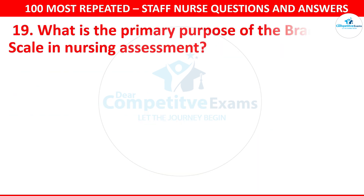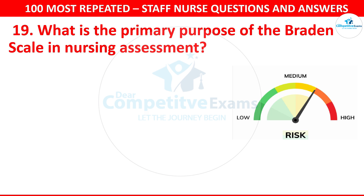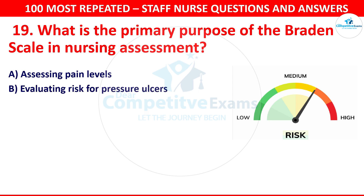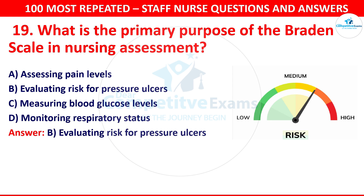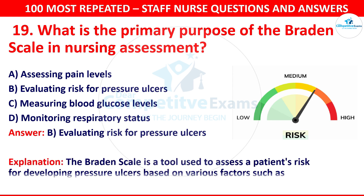Question 19. What is the primary purpose of the Braden scale in nursing assessment? Your options are assessing pain levels, evaluating risk for pressure ulcer, measuring blood glucose levels or monitoring respiratory status. The correct answer is evaluating risk for pressure ulcer. The Braden scale is a tool used to assess a patient's risk for developing pressure ulcers based on various factors such as mobility, moisture and nutrition.